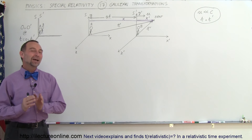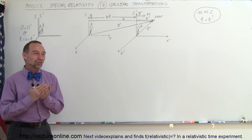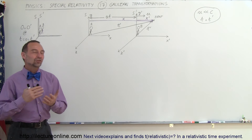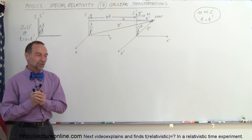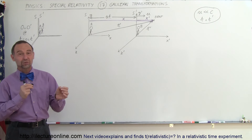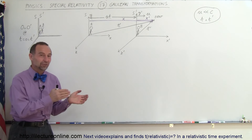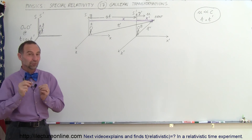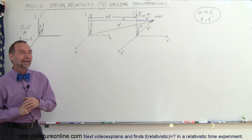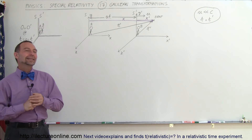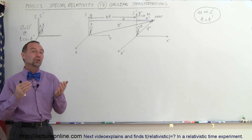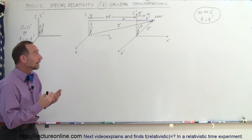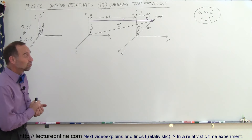Welcome to Electron Line. Before we get into the Lorentz transformation equations — the equations that describe the transformation of one reference frame to another when one reference frame is moving really close to the speed of light — let's take a look at the transformation equations in classical mechanics. Those are called the Galilean transformations.